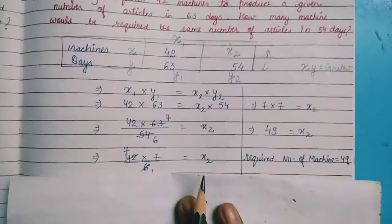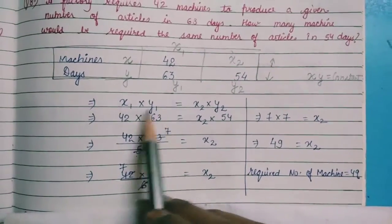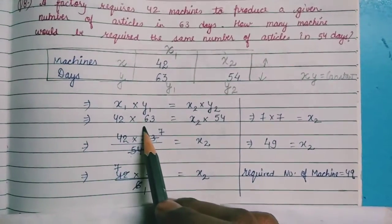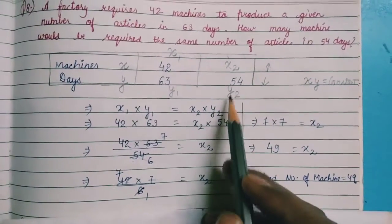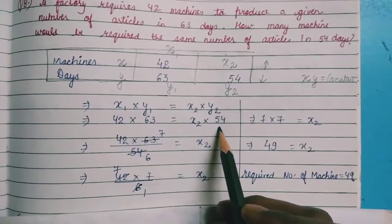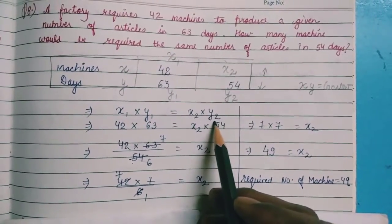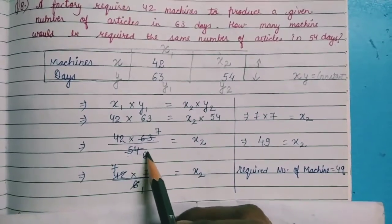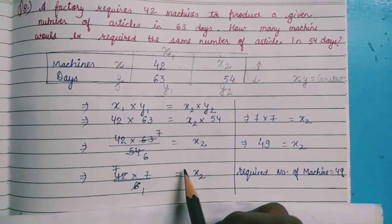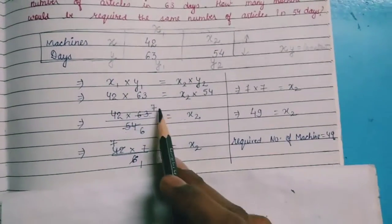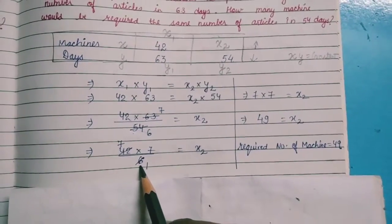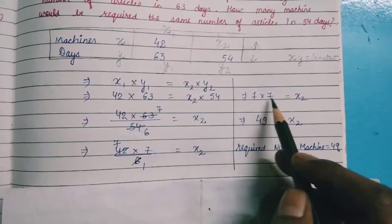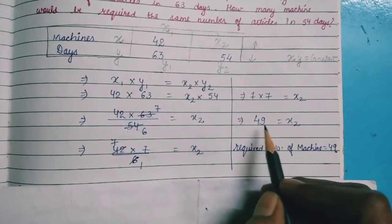Since inverse proportion applies, we use x₁ × y₁ = x₂ × y₂. Here x₁ = 42, y₁ = 63, y₂ = 54, and x₂ is unknown. So: 42 × 63 = x₂ × 54. Moving 54 to the other side: from the table of 9, 54 goes 6 times and 63 goes 7 times. From the table of 6, 42 reduces 7 times, giving us 7 × 7 = 49.